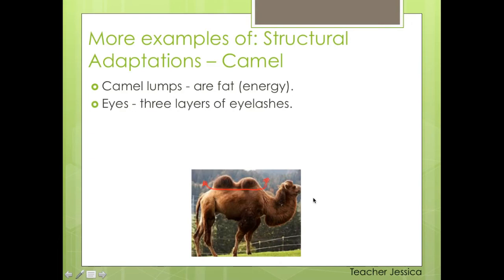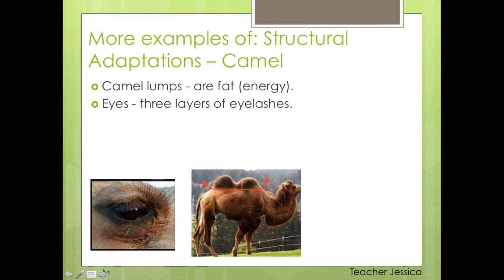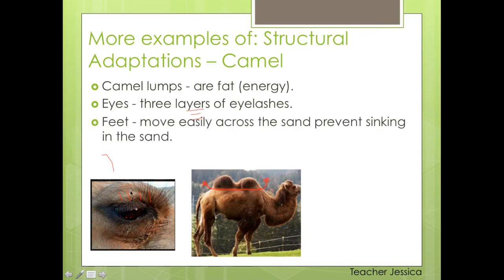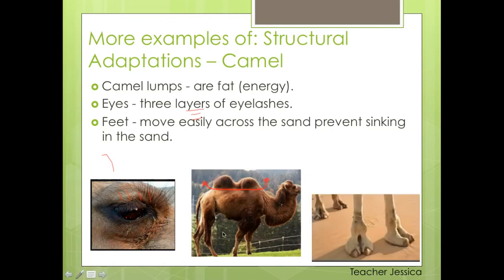Another adaptation of camels: eyes with three layers of eyelashes. Why do you think they have three layers of eyelashes? Do you know where they live? It's to prevent sand from getting in their eyes, because sandstorms are very common in the desert. Another adaptation: the design of their feet helps them move easily through the sand and prevents them from sinking or getting stuck when they walk.